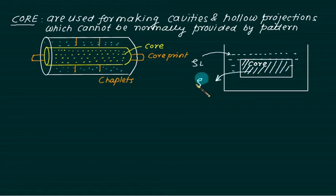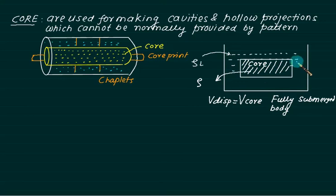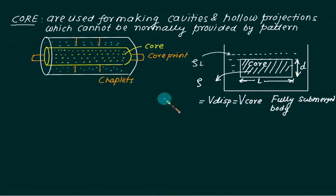The core is made up of sand with density rho. Is this the case of a fully submerged body? Since we have already covered fluid mechanics, we will take help of fluid mechanics. Since it is a fully submerged body, the volume displaced is the same as the volume of the core. Suppose the diameter equals D and the length equals L, so volume displaced equals pi by 4 multiplied by D squared multiplied by L.